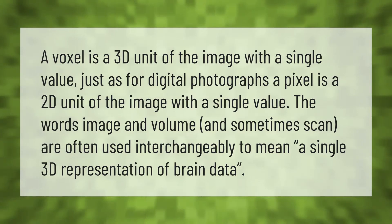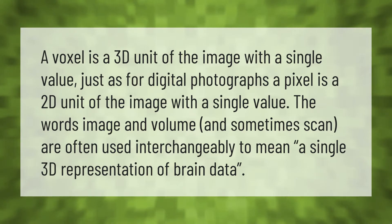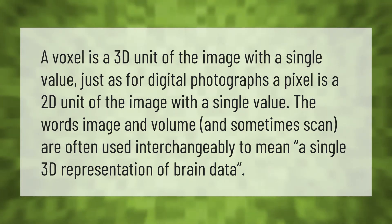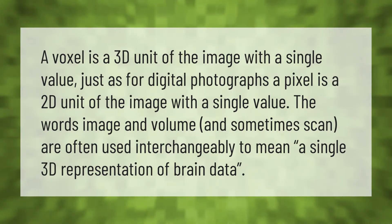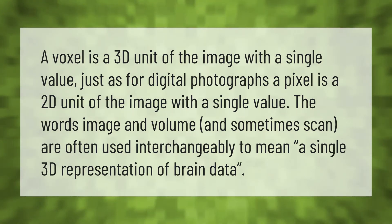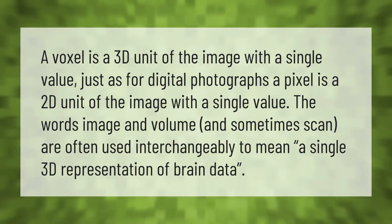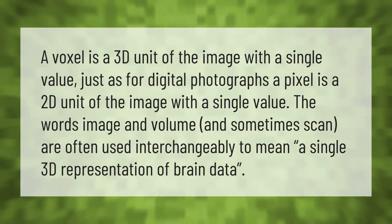A voxel is a 3D unit of the image with a single value, just as a pixel is a 2D unit of the image with a single value. The words image, volume, and sometimes scan are often used interchangeably to mean a single 3D representation of brain data.